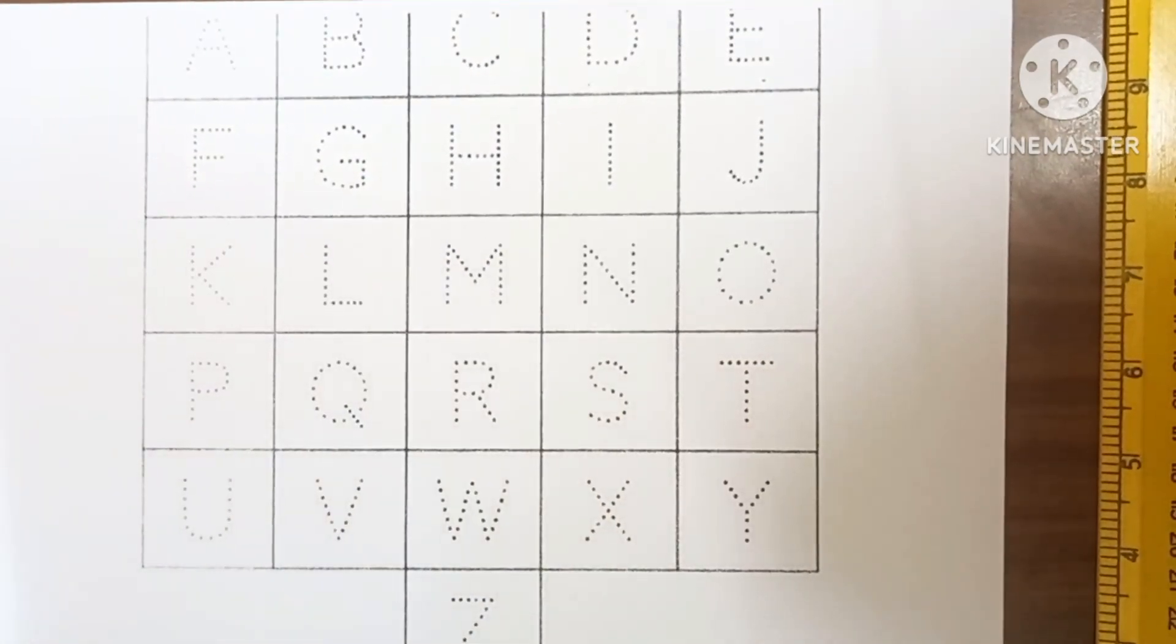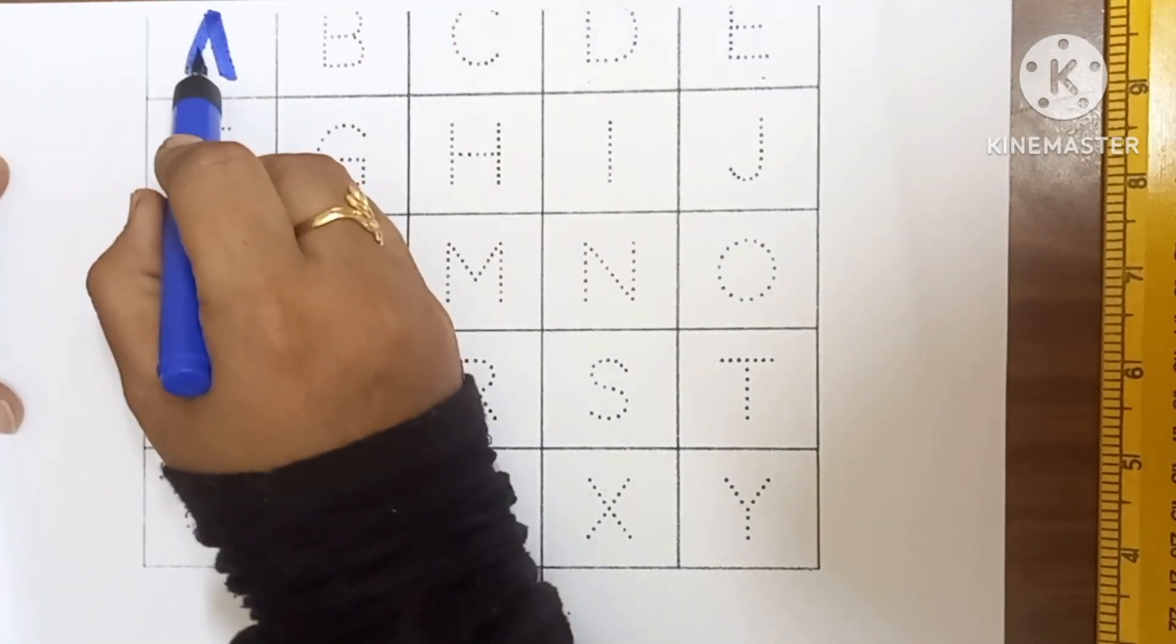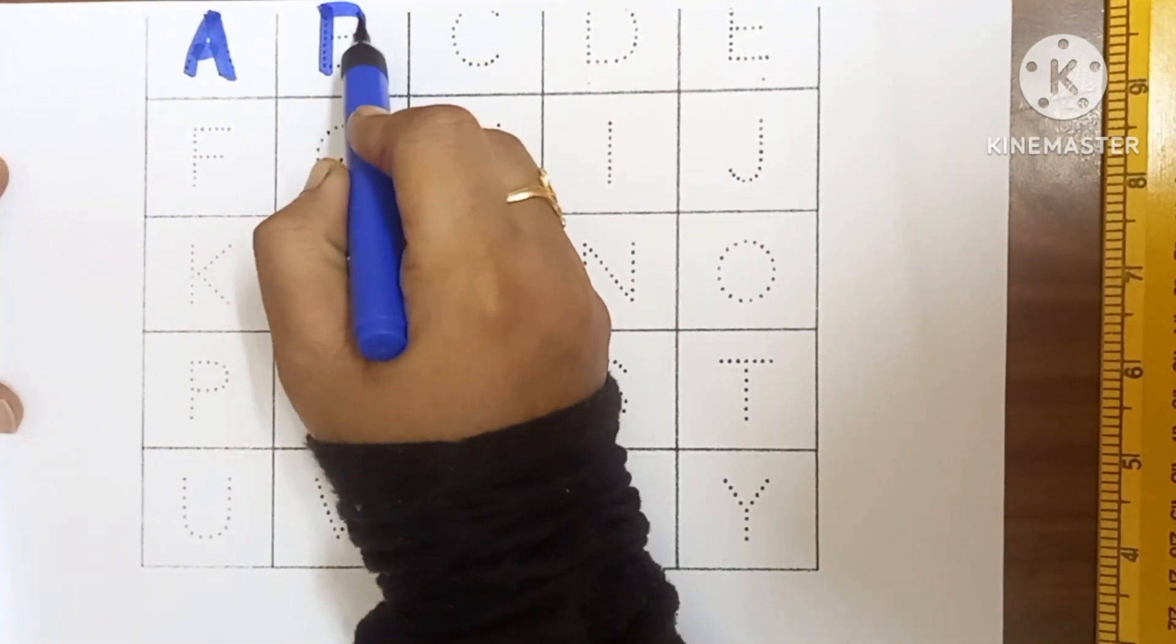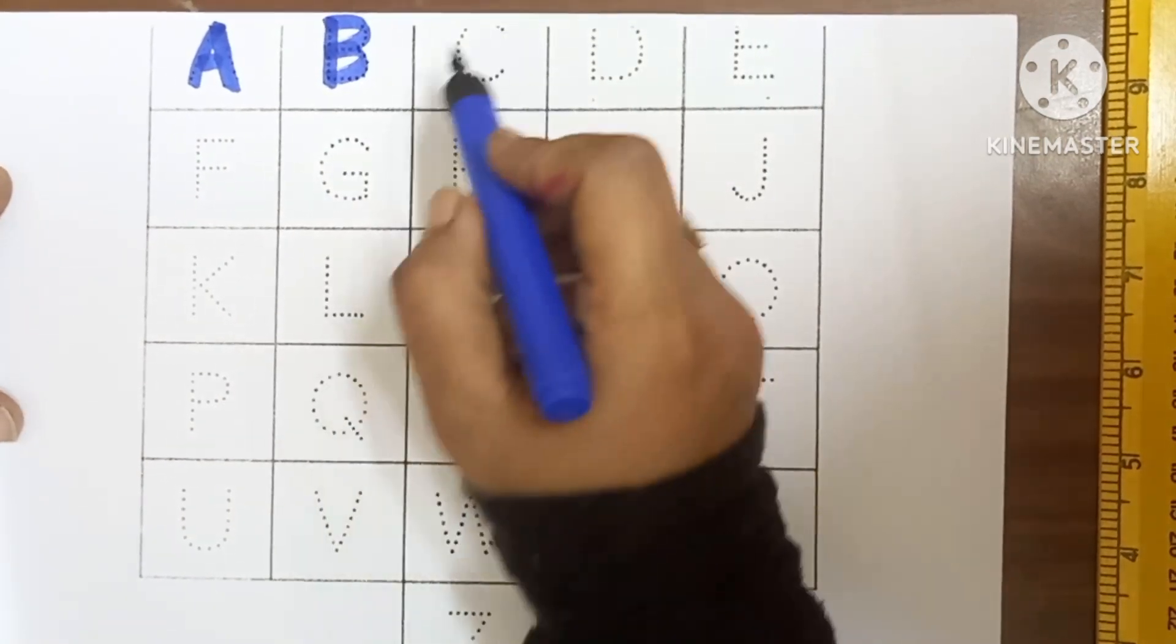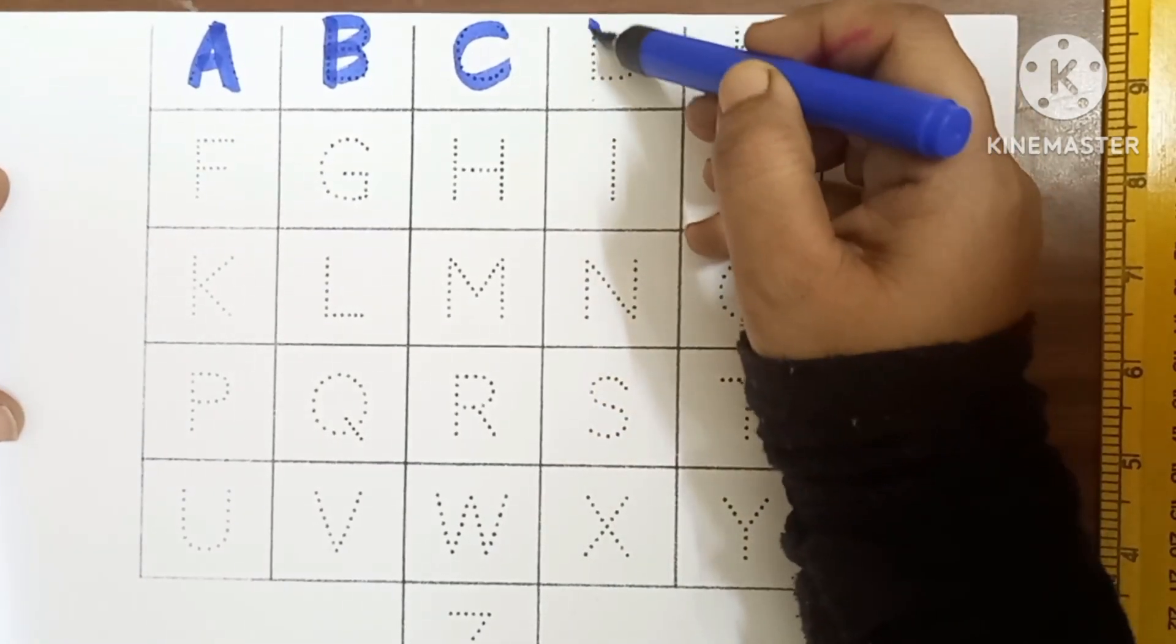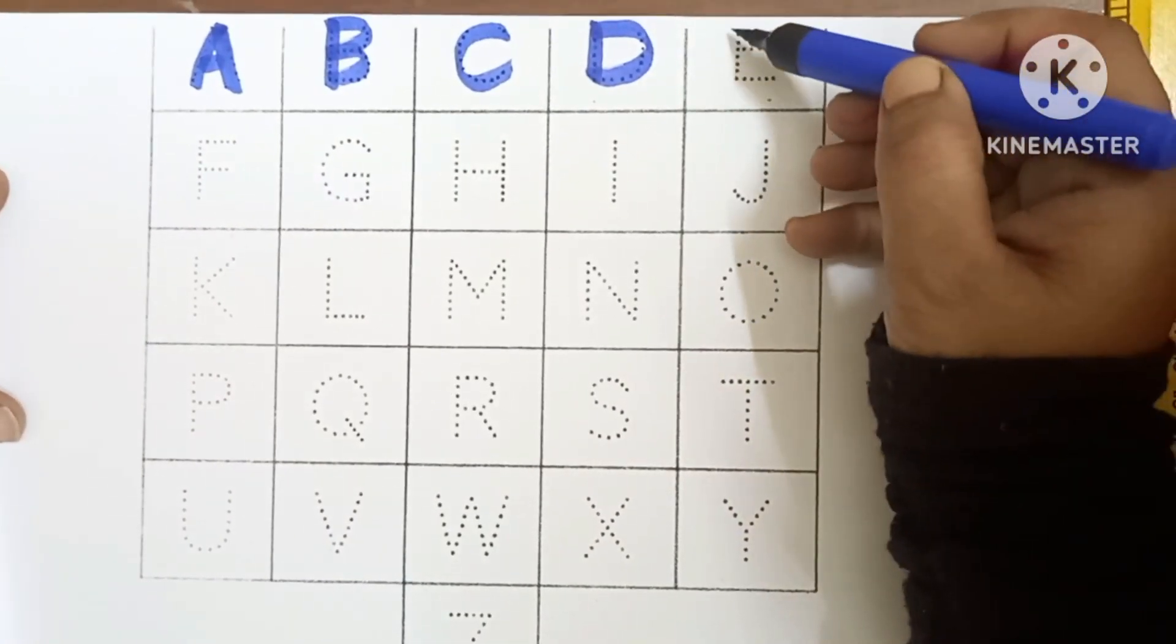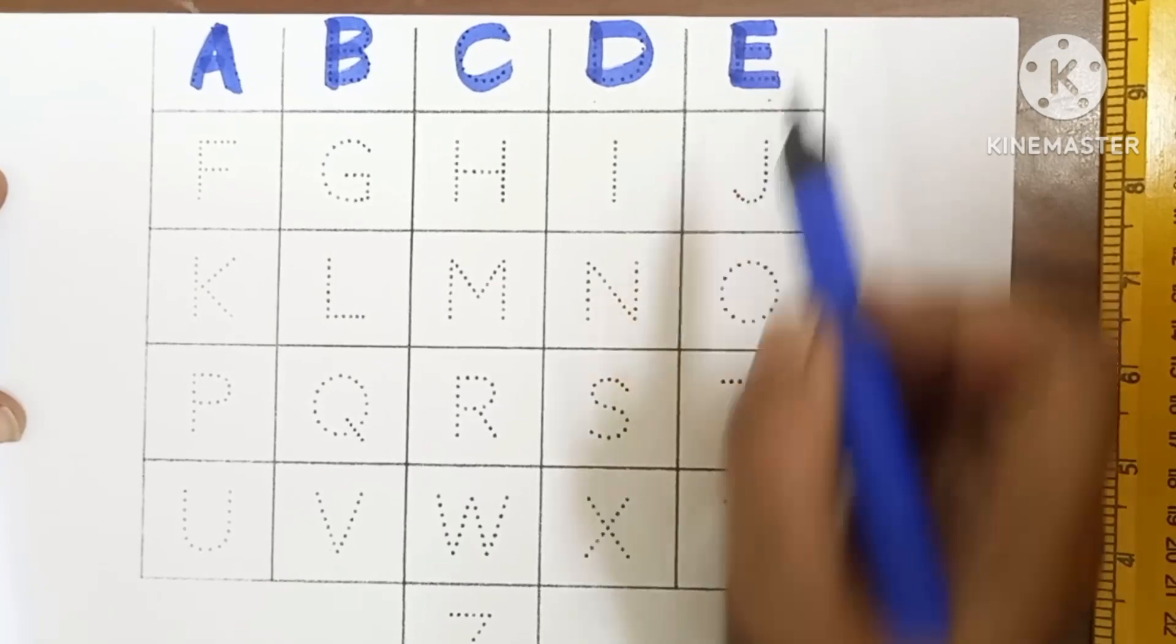Blue color. A, A for aeroplane. B, B for basket. C, C for camel. D, D for dustbin. E, E for egg.